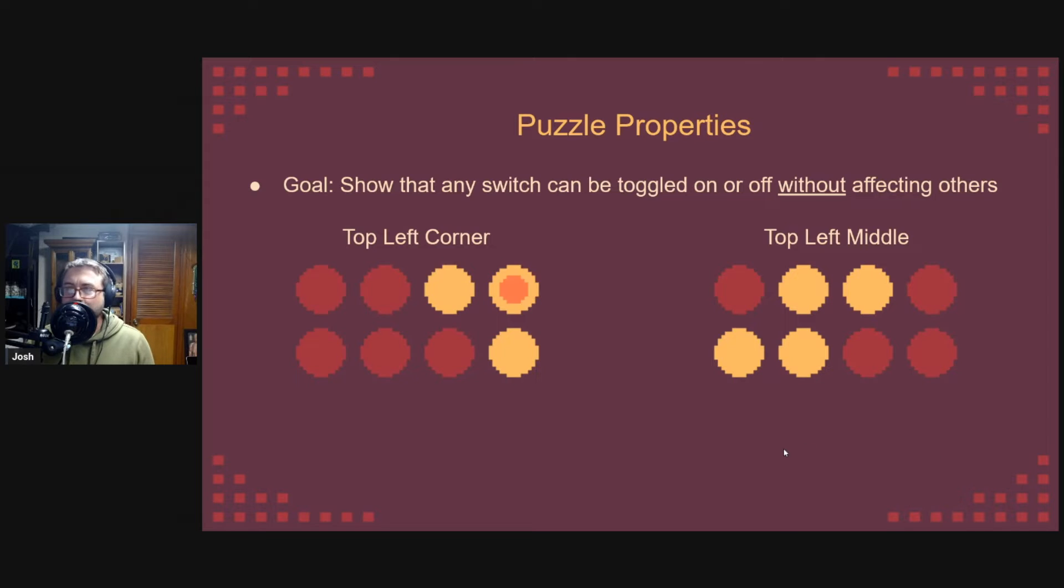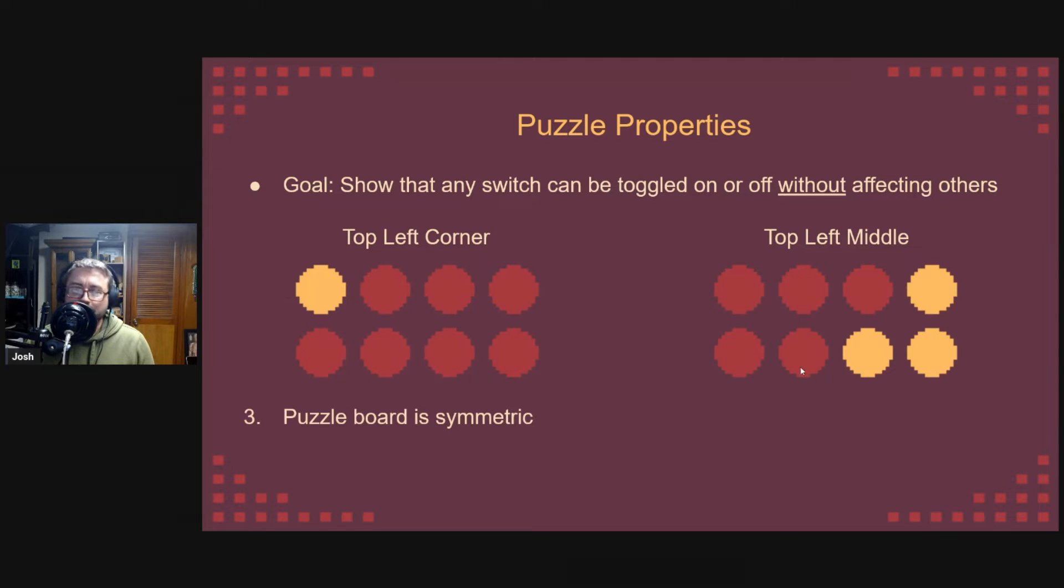So, that's great for these two switches, but what about the other six? Well, the puzzle also has interesting property number three that the puzzle board is symmetric. I can switch or flip-flop any of these move sequences horizontally or vertically and in doing so, I can reach the other six switches and be able to turn them on and off at will.